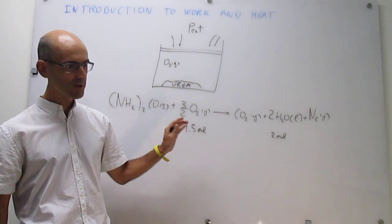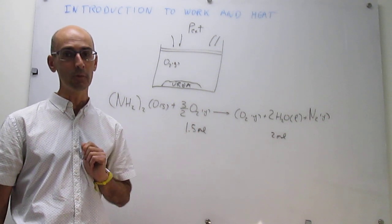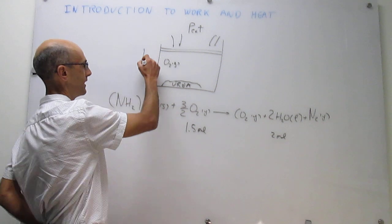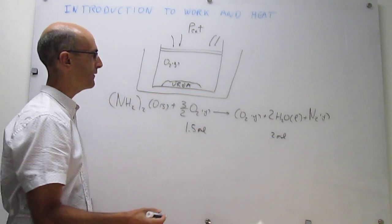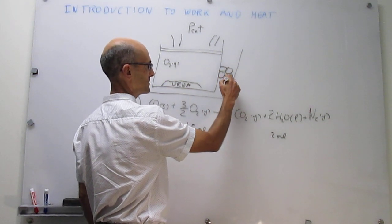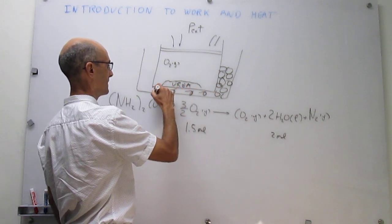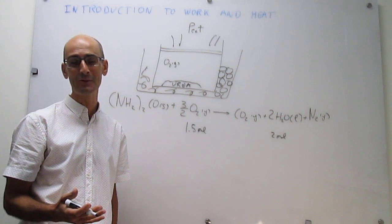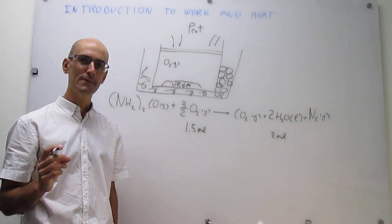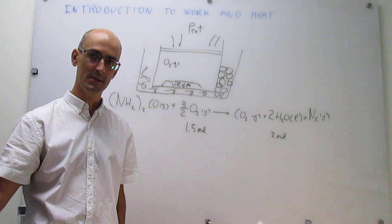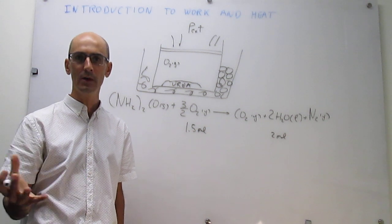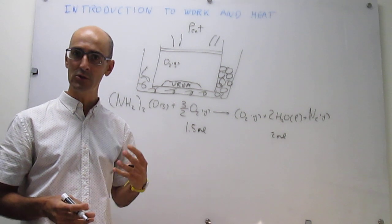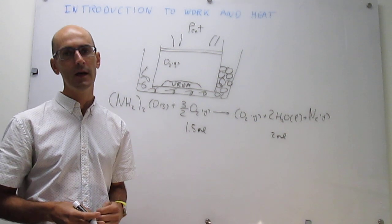What about heat? This reaction is exothermic, so there will also be energy transfer as heat from the system to the surroundings. A way to track that is to submerge the whole system in an ice bath. You would observe that some of those ice cubes melt, which can only happen if there's energy transfer as heat from the chemical reaction to the surroundings. So this reaction transfers energy both as work and as heat.